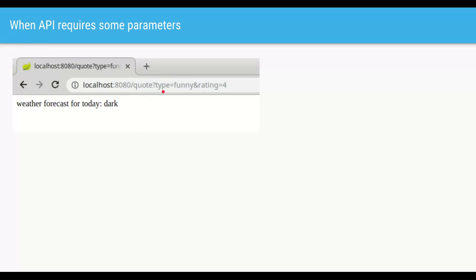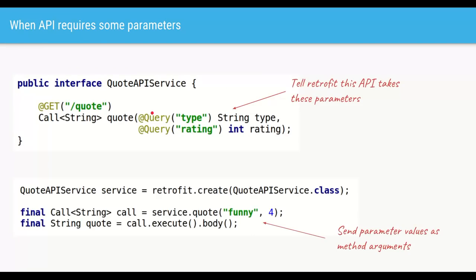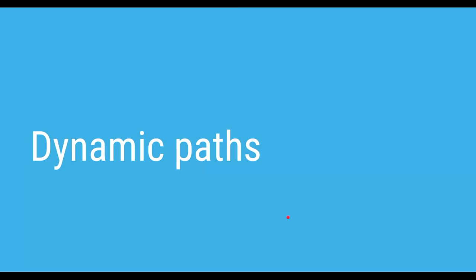If the API also requires query parameters — for example, getting a quote of type 'funny' with a rating of 4 — we can incorporate that in Retrofit. In the interface, add parameters with the @Query annotation. The first parameter is type and the second is rating. When making the actual call, pass in the values, and Retrofit will automatically append them as query parameters in the URL.